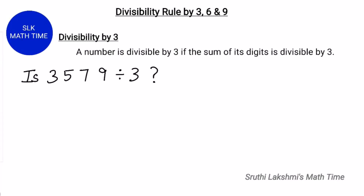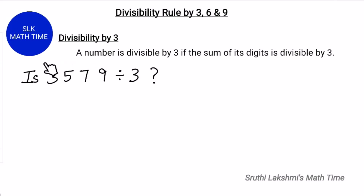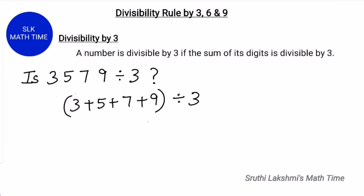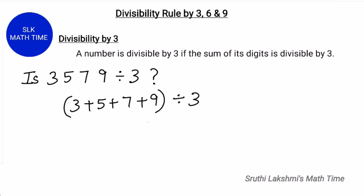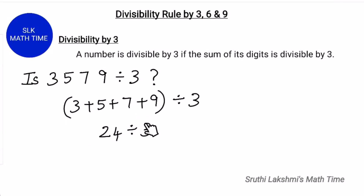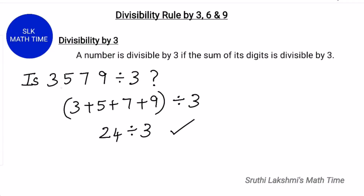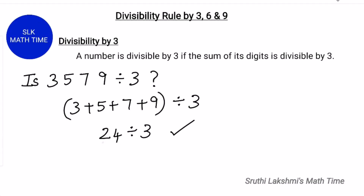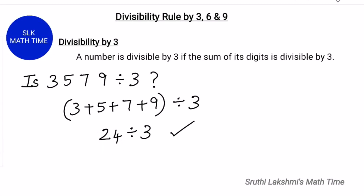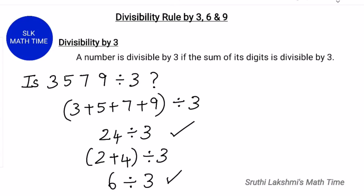Let's see an example. Is 3579 divisible by 3? First, let's add the digits. So 3 plus 5 plus 7 plus 9. When we add this all together, we get 24. And 24 is divisible by 3, so 3579 is also divisible by 3. You can also add up the digits of 24: so 2 plus 4 is 6, and 6 is also divisible by 3.